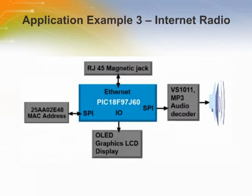In this example, streaming audio is received via Ethernet from the Internet. Radio channels become IP addresses, and content can be controlled via the use of Ethernet.